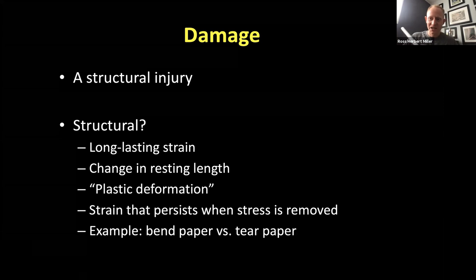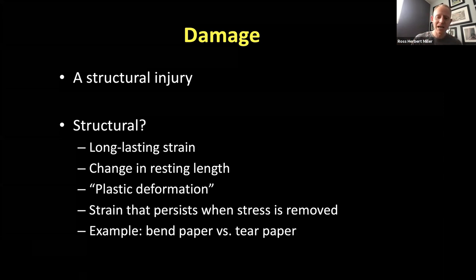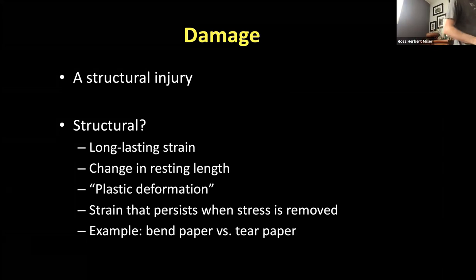Where it becomes injurious is if I stress it repeatedly or with really large stresses such that when I remove that stress, it does not return to its original shape — it's permanently damaged or permanently deformed. That's called plastic deformation — a long-lasting strain, a change in the resting length or shape of that tissue.